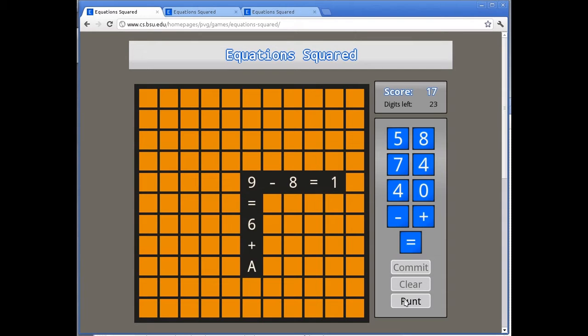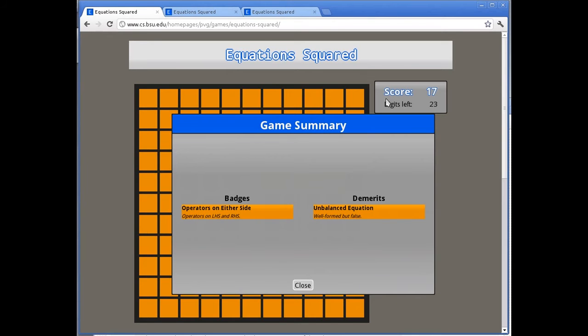I earned the operators on either side achievement. That's because in my first equation, I have the operation on the left-hand side of the equal sign, and in my second equation, I have it on the right. By clicking on the score box, I can see that I have the operators on either side badge and the unbalanced equation demerit. More about that in a moment.